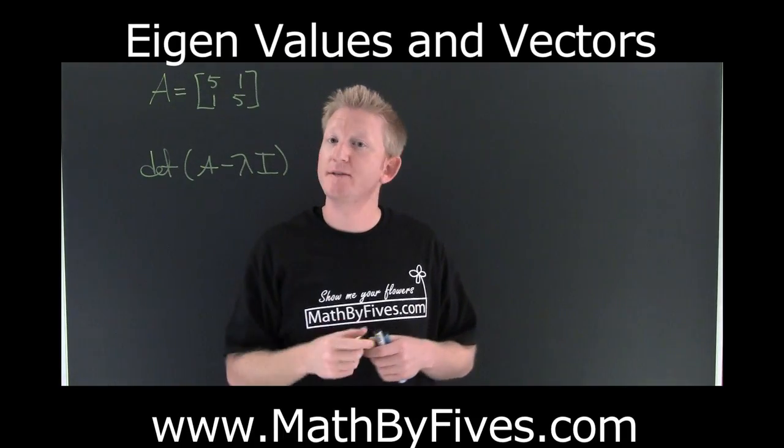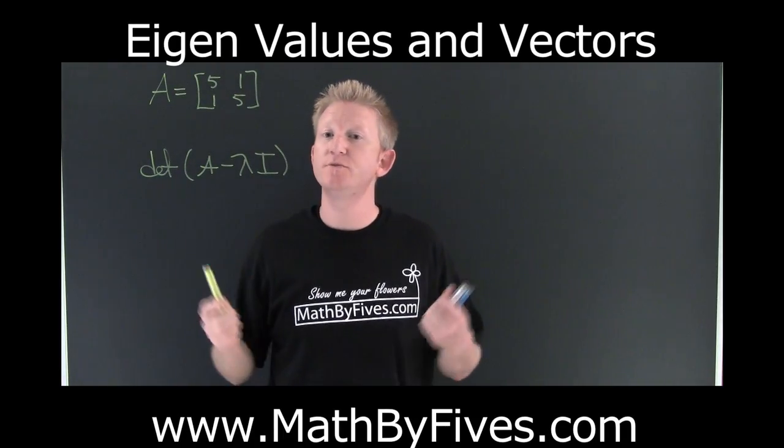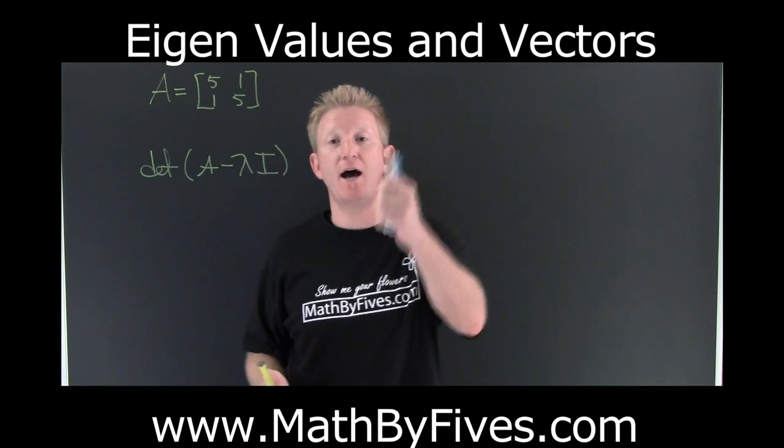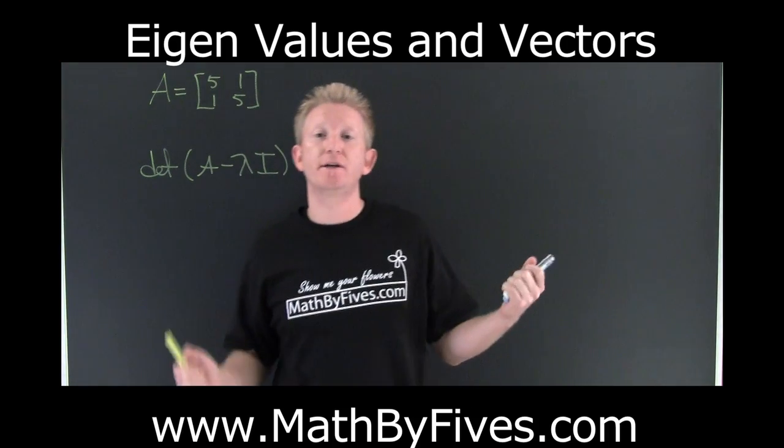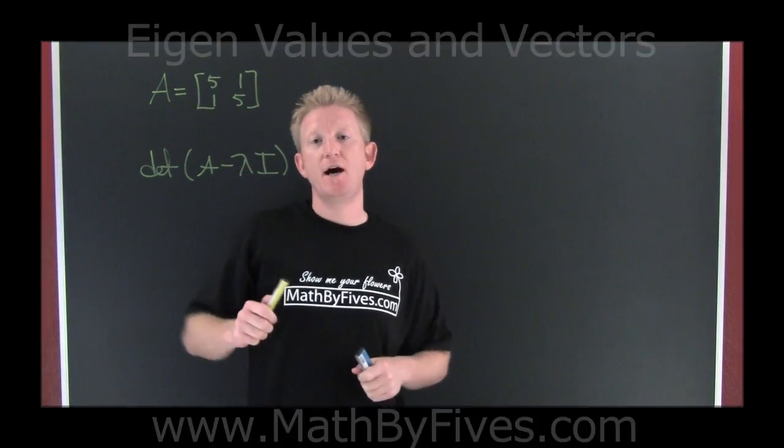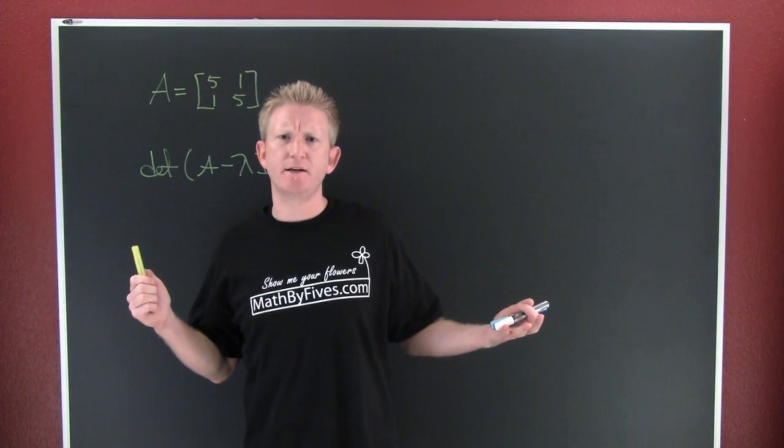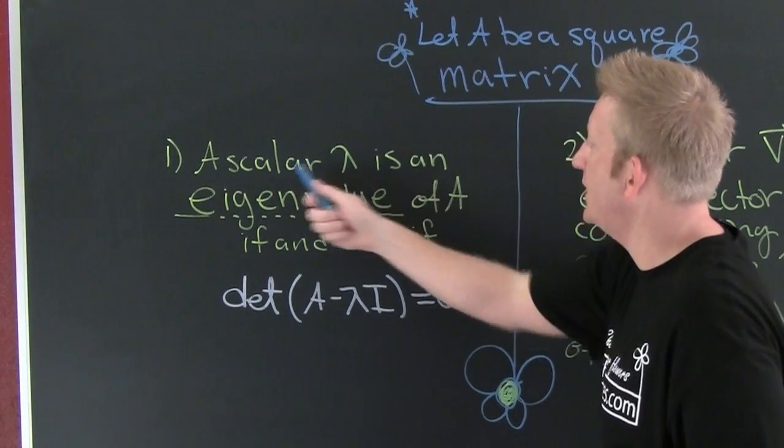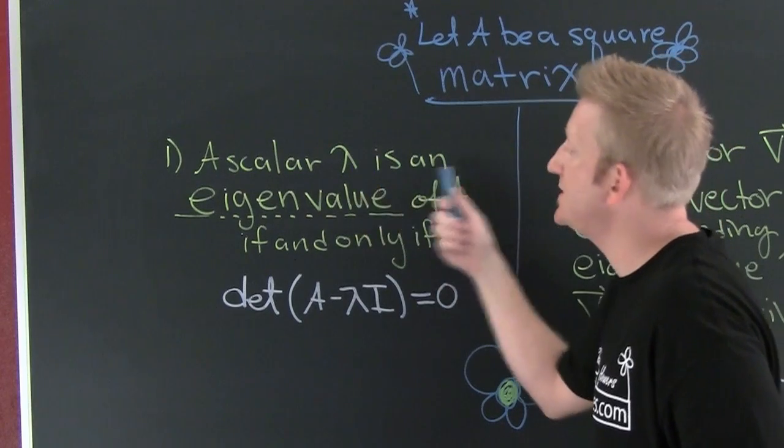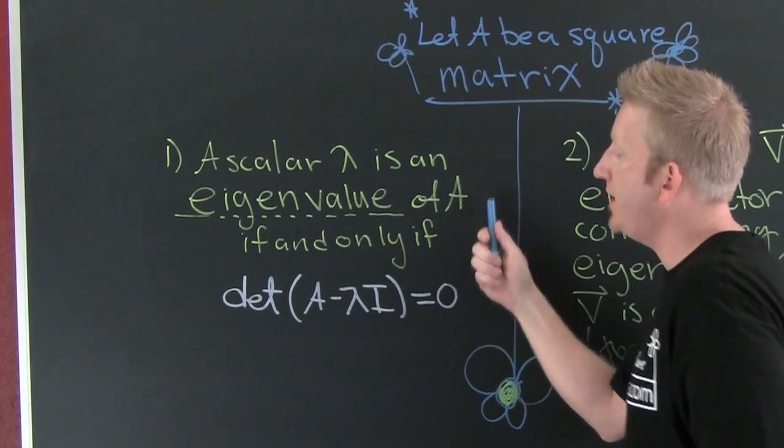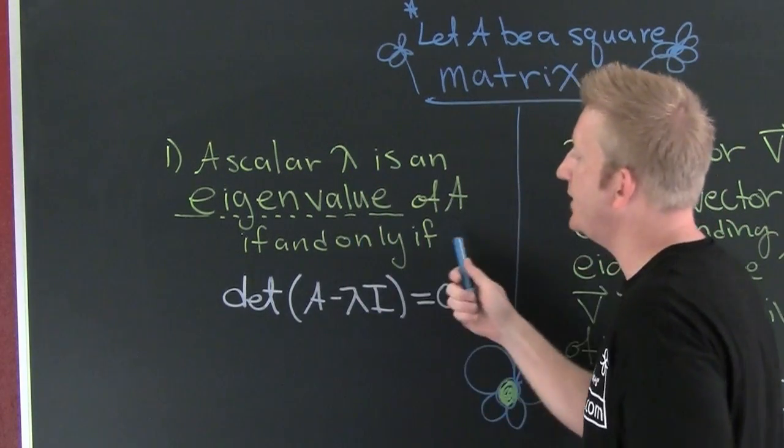Alright people, here we go. As a special request, we're trying to find some eigenvalues and eigenvectors. First, in order to get the eigenvectors you need to find the eigenvalues. And how do you find these eigenvalues? Let A be a square matrix. A scalar lambda is an eigenvalue of A if and only if...